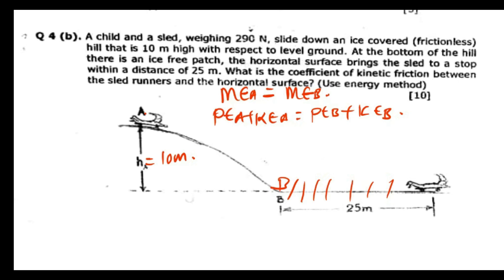At point A we don't expect to have kinetic energy, so we can cancel the kinetic energy term. At point B we don't expect to have potential energy because the height is zero. So we're going to have potential energy at A equal to kinetic energy at B.